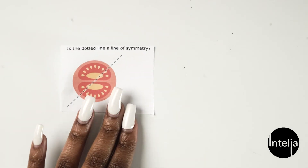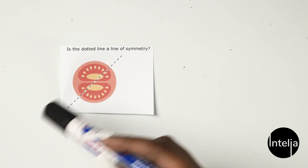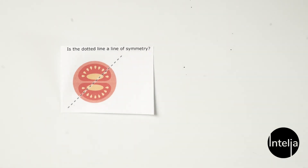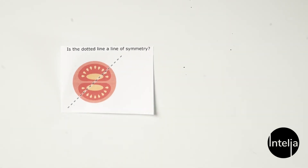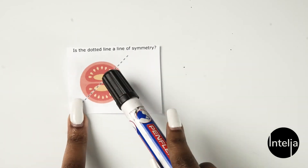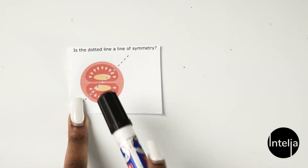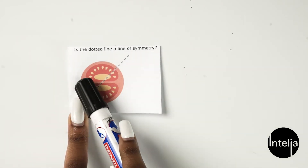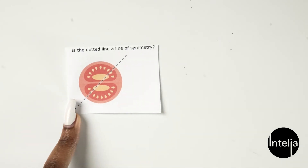Let's look at the next example. I want you to look at this very carefully — is the dotted line a line of symmetry? It may appear to be a line of symmetry, but if you look carefully, this is not that and that is not this. So it isn't a line of symmetry.